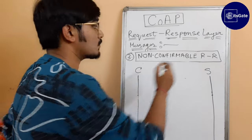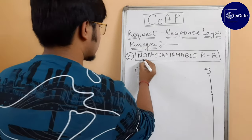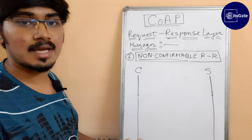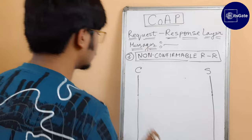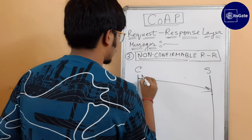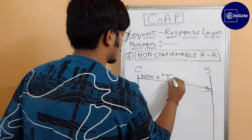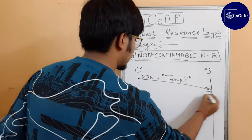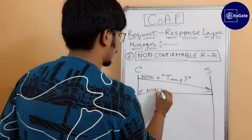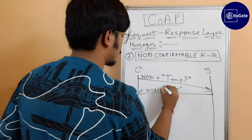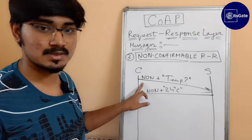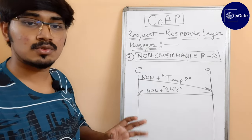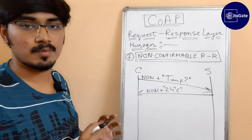The third technique is the Non-confirmable Request-Response technique. In this technique, transactions use NON-type messages. If the client sends a NON message asking for room temperature, the server fetches the data and sends back another NON message with the data packet. The server does not send any acknowledgement, as in the case of a NON message the receiver does not need to confirm successful receipt.